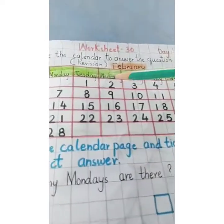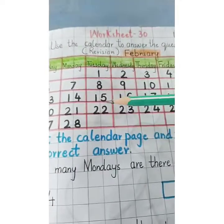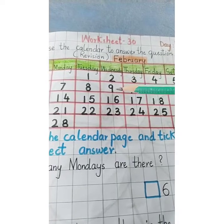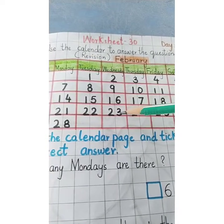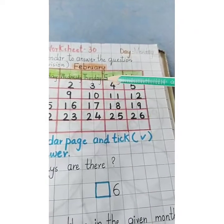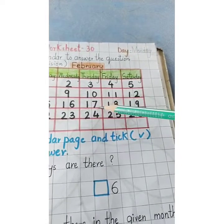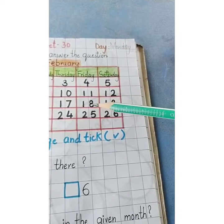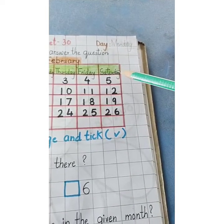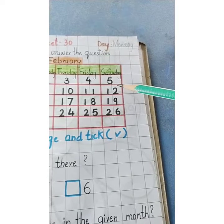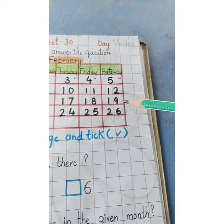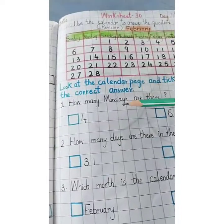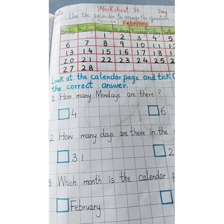Tuesday — which date does it fall on? And Saturday — which dates fall on Saturday? The dates are noted, including the 26th.